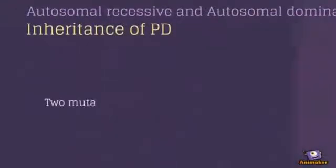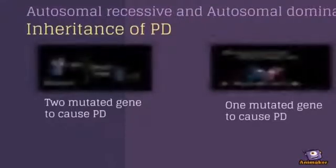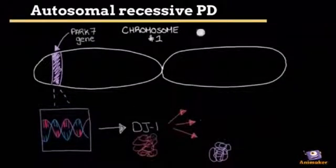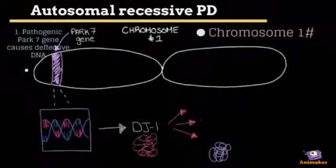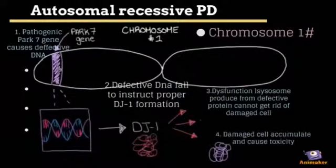Two mutated genes cause recessive PD, but one mutated gene causes dominant PD. Pathogenic PARK7 gene produces defective DJ1 protein leading to defective lysosomes which are unable to remove damaged cells.